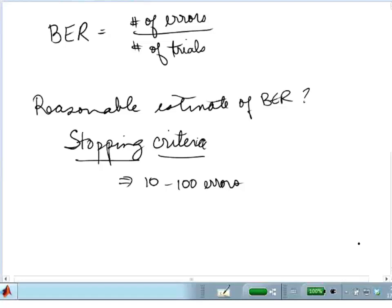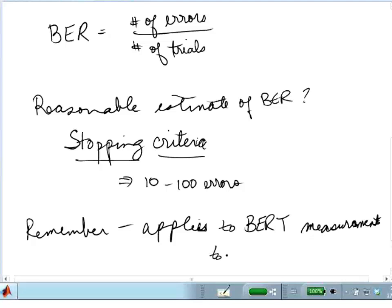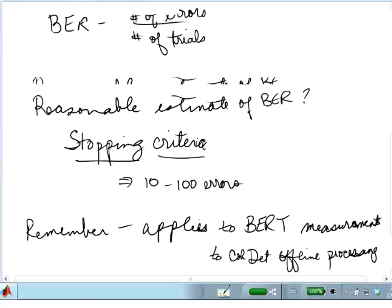And the good rule of thumb is between ten and a hundred. A hundred is better, but if you really can't get to a hundred, then ten will give you something that's reasonable. So remember, applies to BERT bit error rate tester measurements, and to coherent detection offline processing, and to numerical simulations.